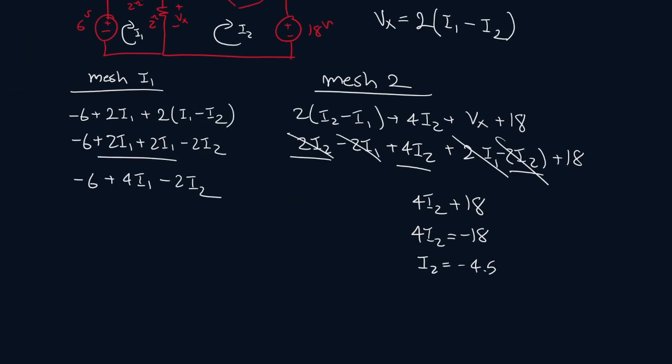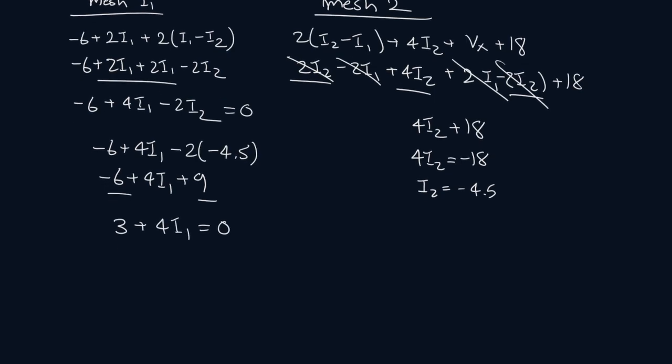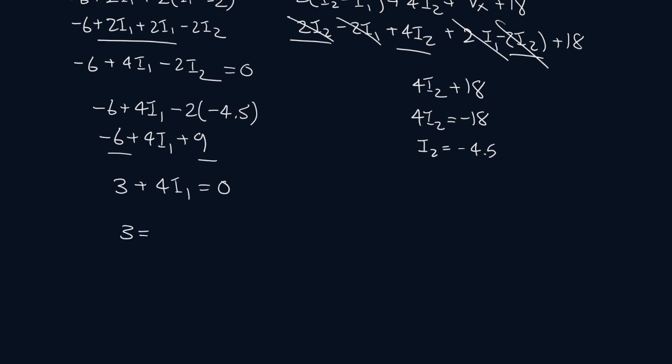And now we can use that to solve for this one. So minus 6 plus 4 I1 minus 2 times minus 4.5. So minus 6 plus 4 I1. So minus 2 times minus 4.5. That should be plus 9. This and this. That gives me 3 plus 4 I1 equals 0. So let's solve for I1. I1 will be minus 0.75.